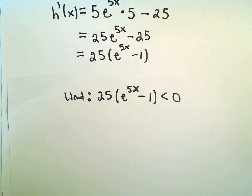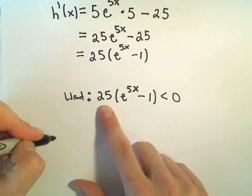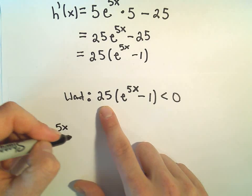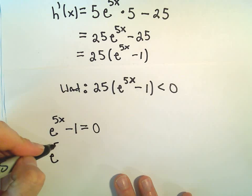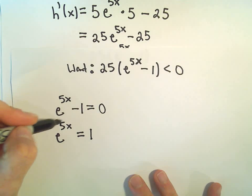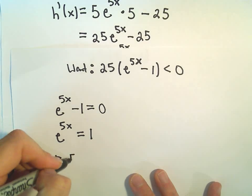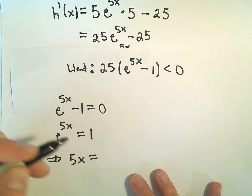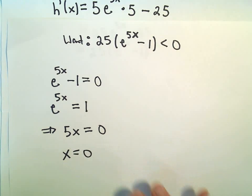To solve inequalities, typically what I do is figure out what makes the expression equal to 0. Well, 25 never equals 0. So we'll take e to the 5x minus 1, set that equal to 0. We would have e to the 5x equals 1. E to what exponent is 1? Well, e raised to the 0 power equals 1. So that would tell us that 5x has to equal 0. If we divide both sides by 5, that would tell us that x equals 0.